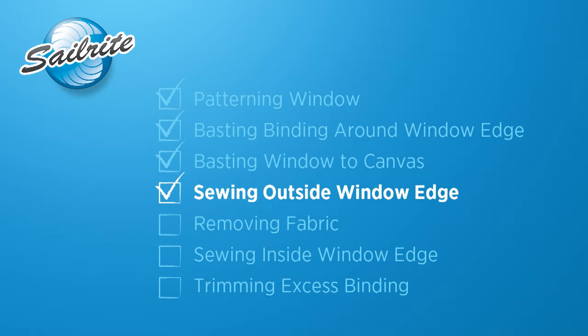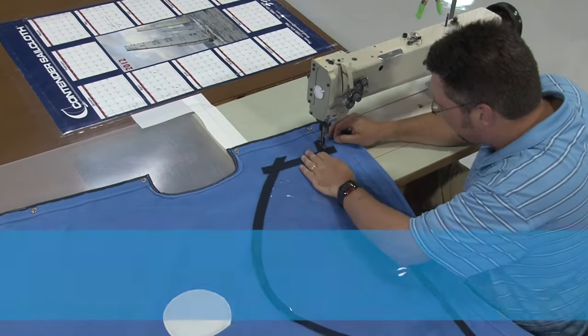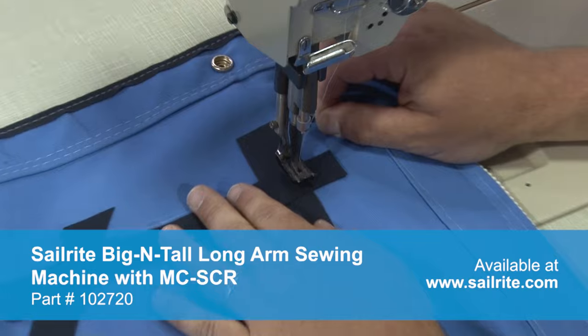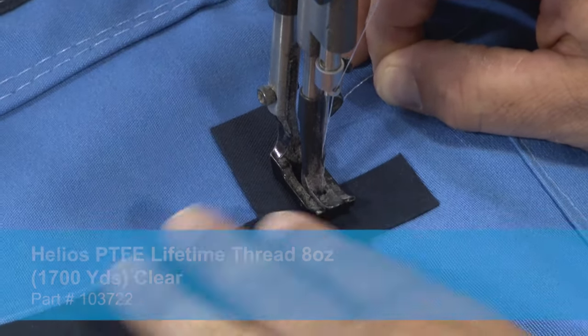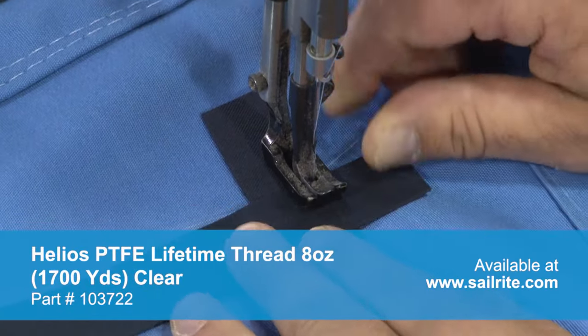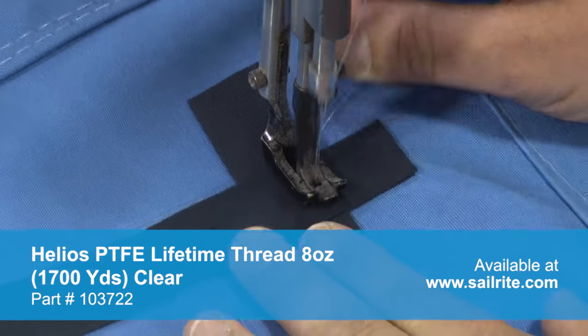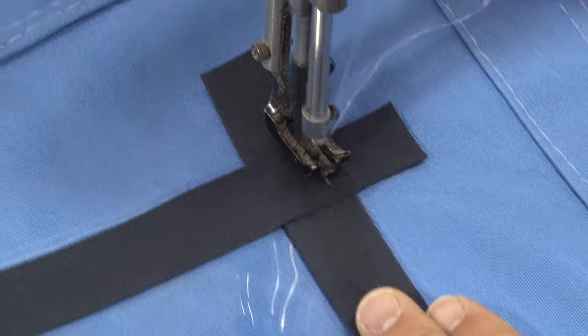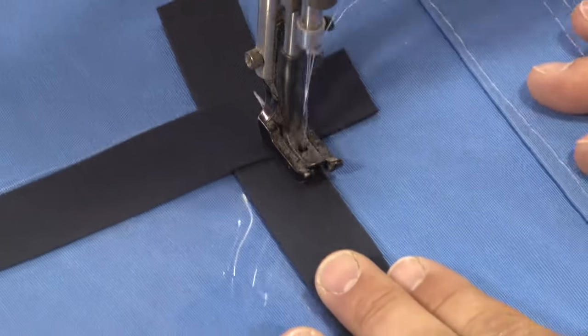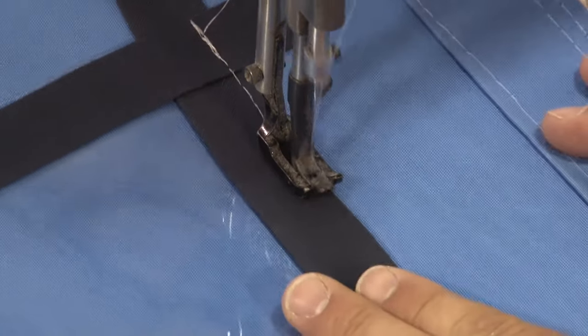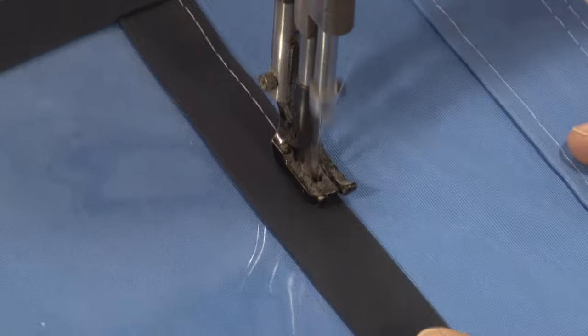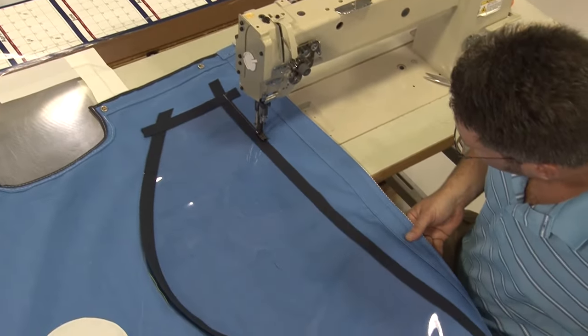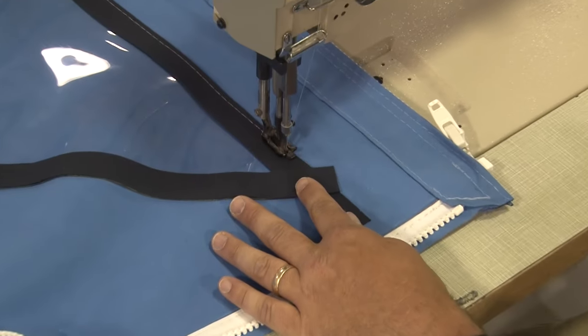We are going to take this over to the big and tall sewing machine and we are going to use the Helios PTFE Lifetime Guaranteed Thread. This thread does not rot and it is chemical resistant. Helios thread is a lot like Tenara thread except for Helios sews a little bit easier. You can also sew this kind of application on with a Sailrite Ultrafeed or a good heavy duty sewing machine. Sometimes even a home sewing machine can be used. You will notice there at the beginning a reverse to lock his stitch in place. The first stitch you want to be towards the outside of the binding, not the inside.